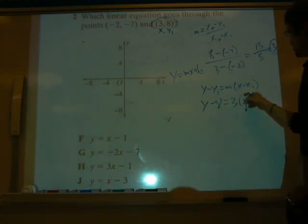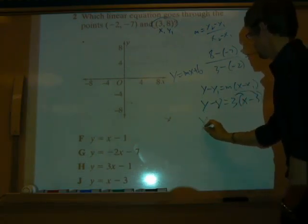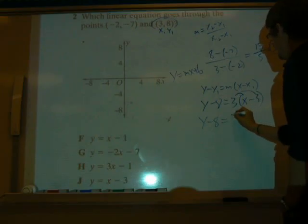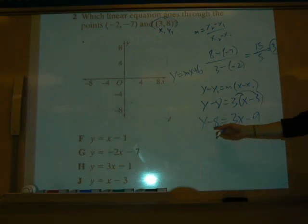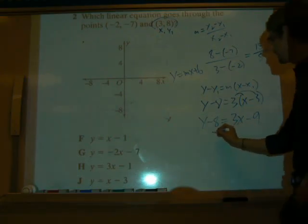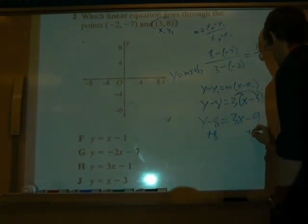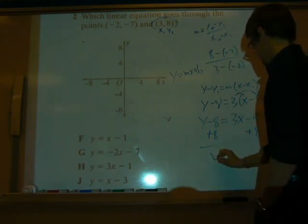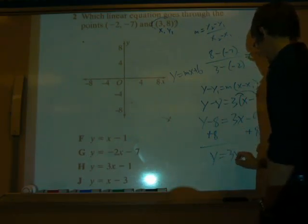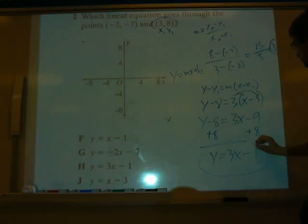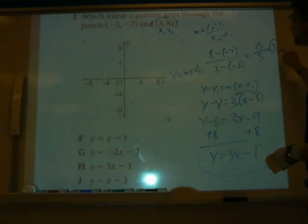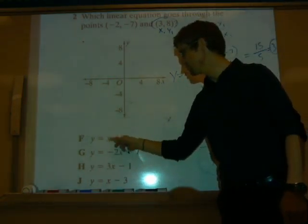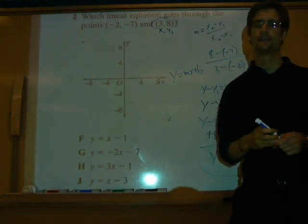So to do this, distribute this 3 to both of these. So we're going to have y minus 8 equals 3x minus 9. Then our last step, bring this 8 over, add 8 to both sides. And then we're going to have our final answer of 3x minus 1, which is H. And we already knew it was that answer because we found the slope to be 3. And this is the only equation with a slope of 3.